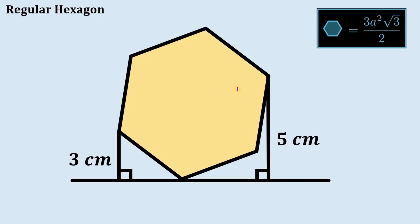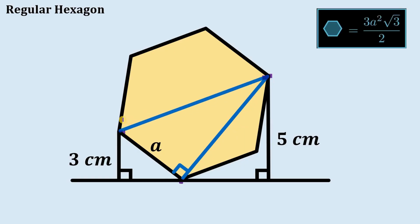We need to find the length of the side of this hexagon. We let this side of the hexagon be equal to a. Then we connect this point to this point to create a 90-degree angle, and connect this point to this point to create a triangle. Note that this angle is 120 degrees, so half of it is 60 degrees.